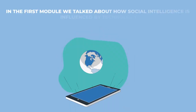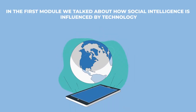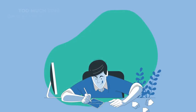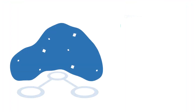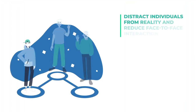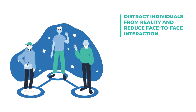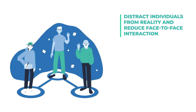In addition, in the first module we talked about how social intelligence is influenced by technology. Spending too much time on electronic devices can decrease social intelligence because they can distract individuals from reality and reduce face-to-face interaction.